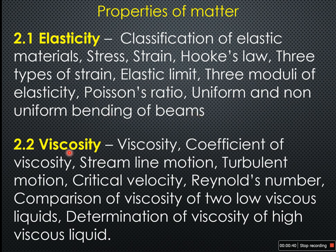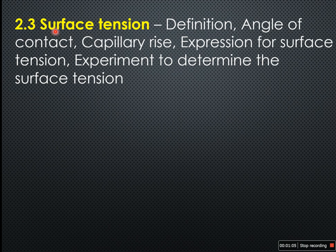And in section 2.2, viscosity, we discuss: viscosity, coefficient of viscosity, streamline motion and turbulent motion, what is critical velocity, what is Reynolds number, how can we compare the viscosity of two low viscous liquids, and determination of viscosity of high viscous liquids. And in section 2.3, surface tension: what is surface tension, its definition, angle of contact, capillary rise, expression for surface tension, and the experiment to determine surface tension.